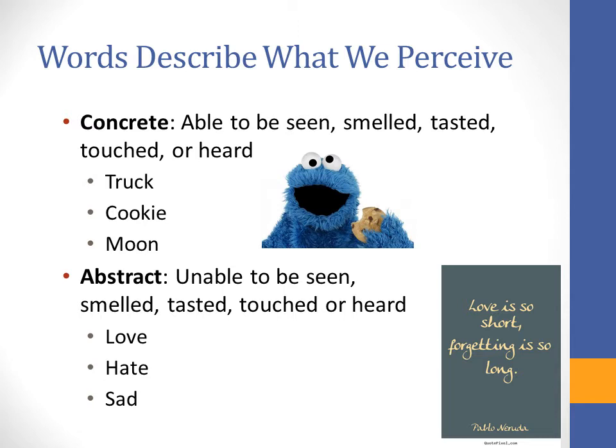Abstract ideas include love, hate, and sadness. That quote on the right-hand side is by Pablo Neruda, a great poet of love poetry. He wrote, 'Love is so short and forgetting is so long.' And if you've ever had your heart broken, you'll know exactly what that means.